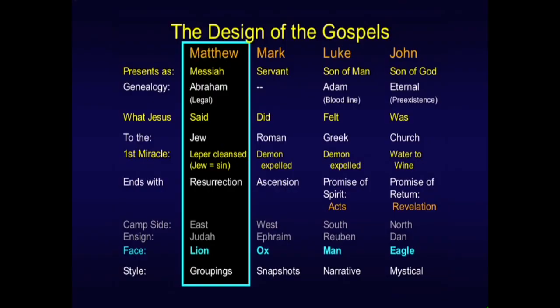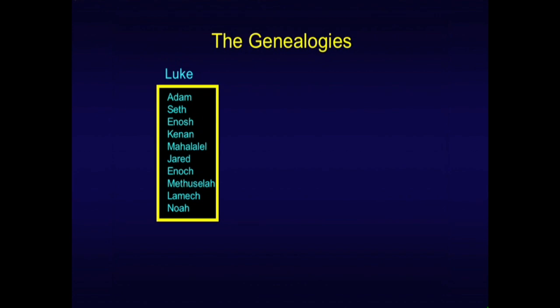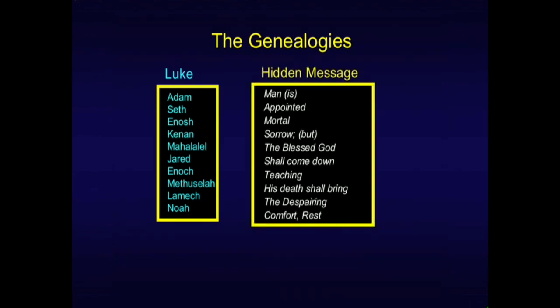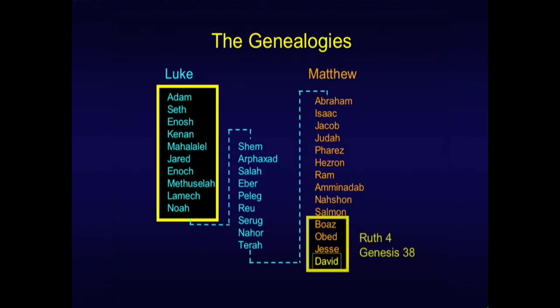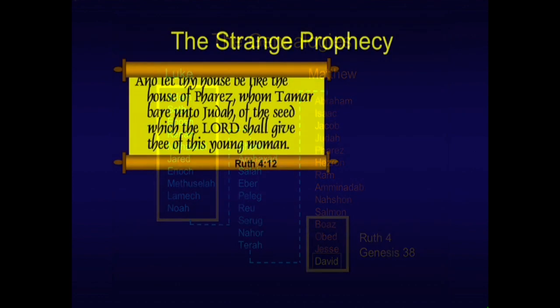Matthew also emphasizes groupings. The genealogies are worth reviewing. Adam through Noah — if you've studied Genesis chapter 5 and translated the meaning of those names, you get: 'Man's appointed mortal sorrow, but the blessed God shall come down teaching, that His death shall bring the despairing comfort or rest.' That's an astonishing summary of the Christian gospel tucked away in a genealogy in the Torah. Matthew goes from Abraham down to David, and Luke's gospel fills in between Noah down to Abraham.